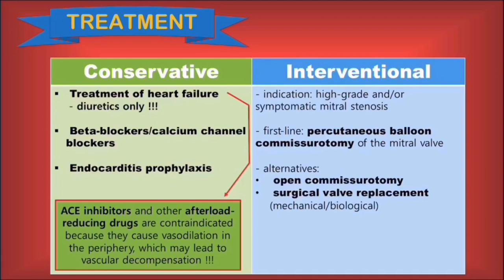A more radical approach is the interventional treatment, generally indicated for cases of high-grade and/or symptomatic stenosis. First-line treatment is percutaneous balloon commissurotomy of the mitral valve — a commissure being the line where the leaflet margins meet. The best candidates are symptomatic patients with uncomplicated mitral stenosis who present with pliable, mobile, relatively thin, minimally calcified mitral leaflets. The catheter is introduced transvenously all the way to the heart and a balloon is inflated inside the mitral valve, separating the previously fused leaflets. Alternatives are open commissurotomy and surgical valve replacement, either mechanical or biological.